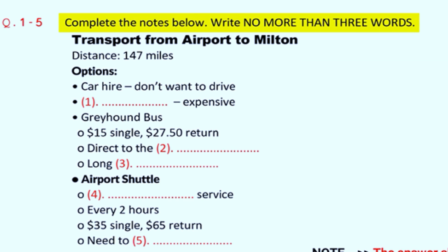Wow, is it as far as that? Yes, I'm afraid so. But you have a number of options to get you there and you can always rent a car right here at the airport, of course. Well, I don't really want to drive myself, so I'd like more information about public transport. In that case, the quickest and most comfortable is a cab, and of course there are always plenty available, but it'll cost you. You can also take a Greyhound bus or there's an airport shuttle service to Milton. I think for that kind of distance, a cab would be way beyond my budget. But the bus sounds OK. Can you tell me how much that would cost? Sure. That would be $15 one way or $27.50 return. That's on the Greyhound.